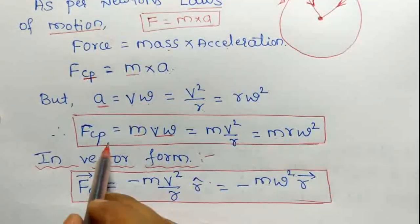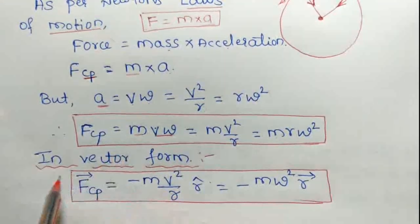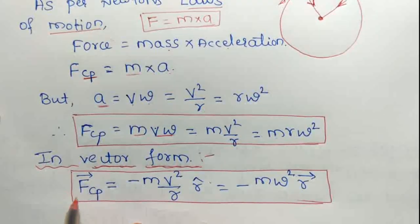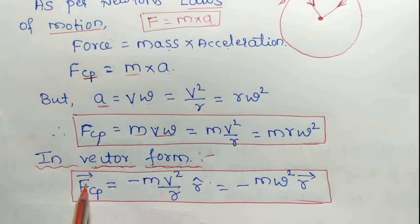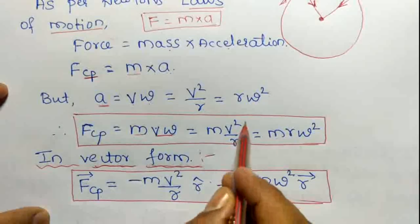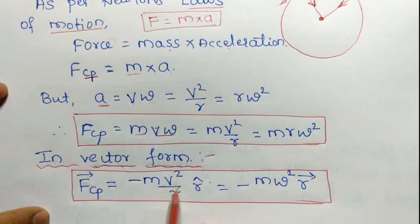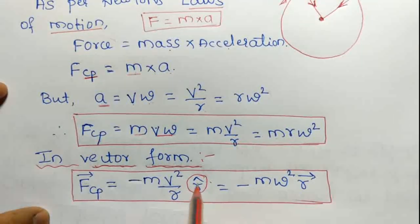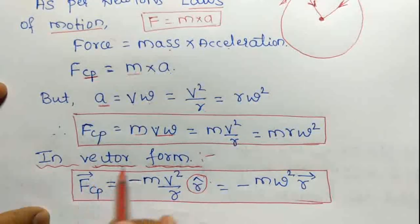In vector form, centripetal force can be written as minus M into V squared upon R times R-cap, because force is a vector quantity. The minus sign is because the radius vector R and the centripetal force FCP are in opposite directions — R points outward while FCP points toward the center.